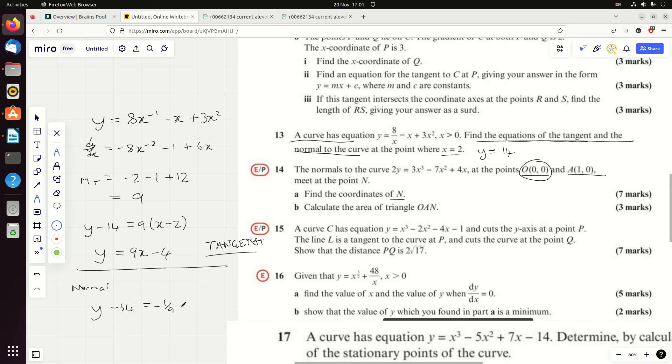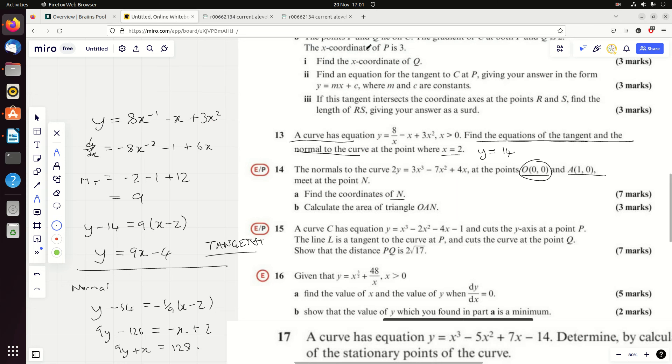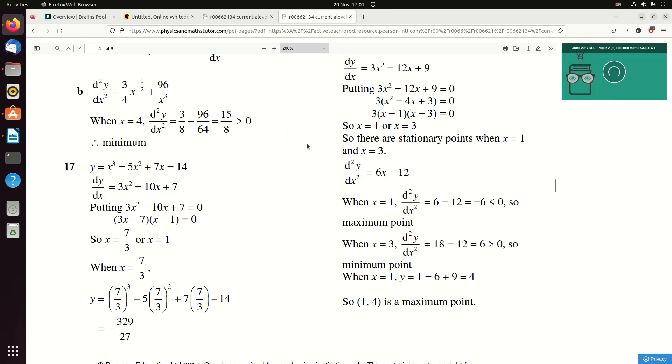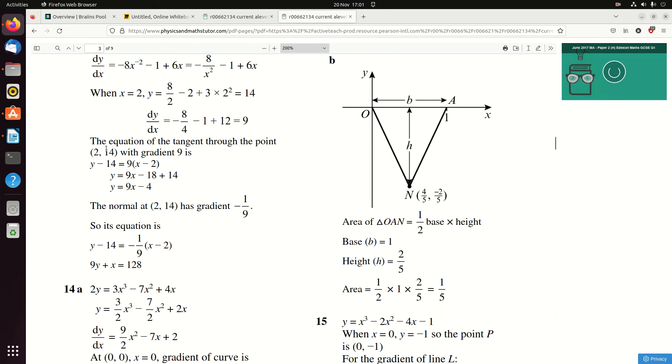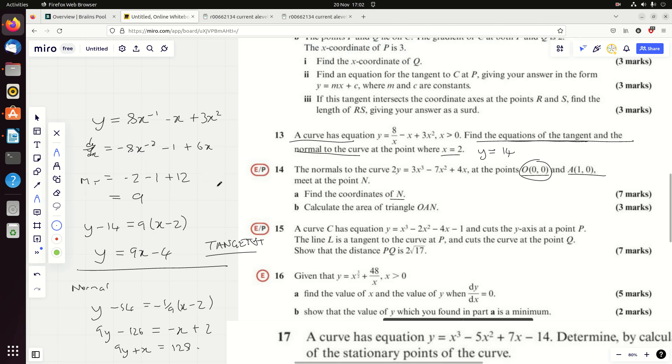What about the normal? The normal is just going to be exactly the same, but we're going to use minus a ninth times x minus 2. I'd personally times everything by 9, so you get 9y minus 9 times 14, 90 plus 36, 126, equals minus x add 2. And so you get 9y plus x is 128, and that's the normal. Let's see if we've got it right. What question was that even? Number 13: 9x minus 4 and 9y plus x is 128. Exactly the same. Wow, roll on us.